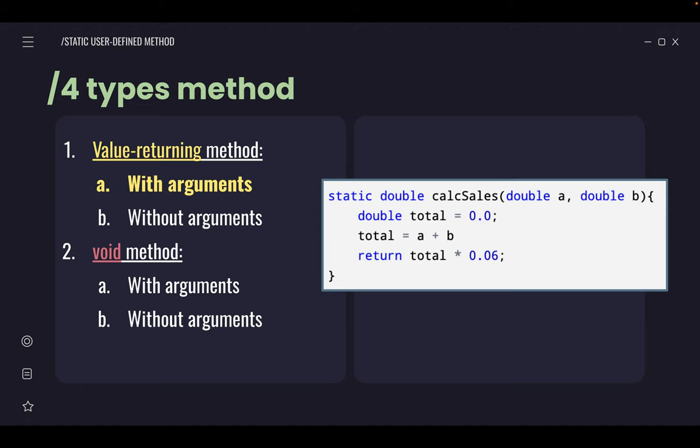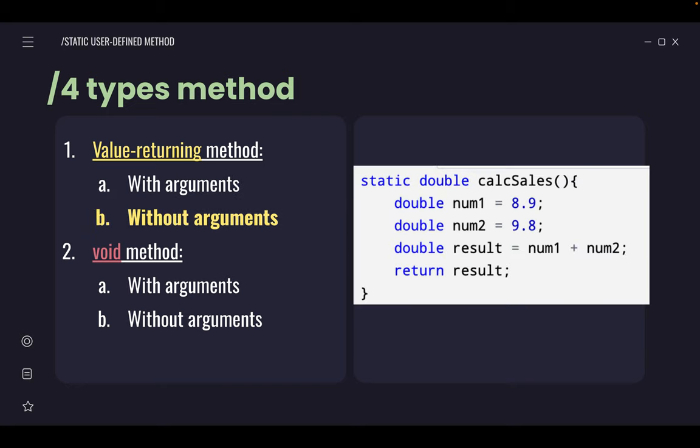Next, let's look at an example of value-returning method without argument. What's the difference? The difference is in the bracket—there's nothing. So that is what we call without argument. But still, it's a value-returning method because here, notice, the return type we put is double. So we need to have a return statement. What does it do here? It declares two numbers, 61.9 and 9.8, then we declare another variable result, which calculates the sum of both numbers, and then we return back the result. That's all.